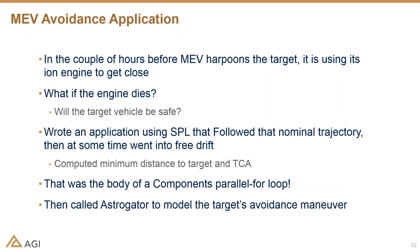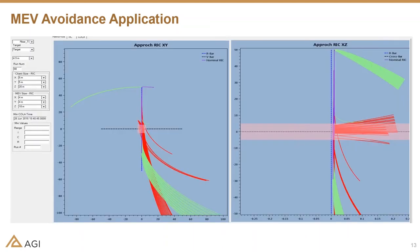After that parallel for loop finished, we could automatically have an Astrogator sequence compute the avoidance maneuver — if the vehicle had to get out of the way, what direction should it go? The green lines in the visualization are nominal trajectories that don't collide with the pink keep-out box corresponding to the client vehicle's keep-out zone, mostly because of the solar arrays, and the red lines are the ones that go through it.